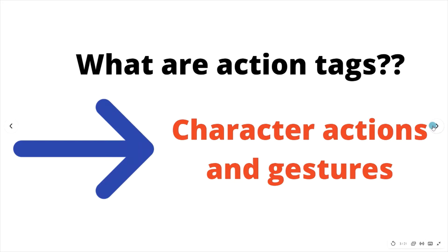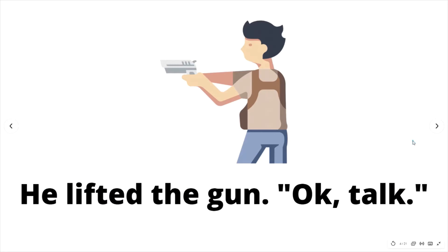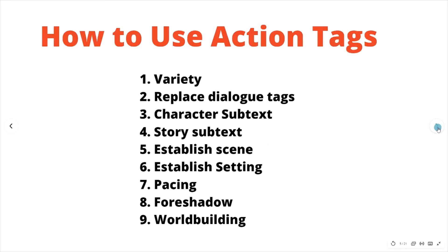So what are action tags? Action tags are any character actions and gestures. Some authors even include character thoughts, like introspective thoughts and feelings, with action tags. For example, 'He lifted the gun. Okay, talk.' The 'he lifted the gun' is the action tag in that sentence.